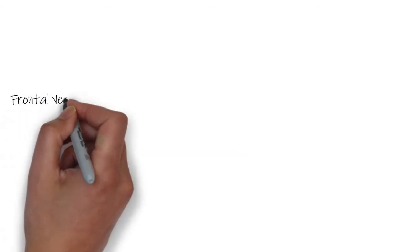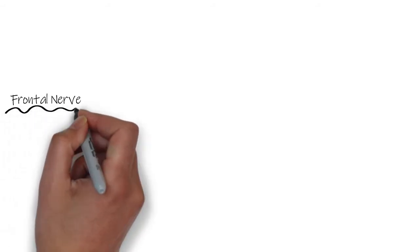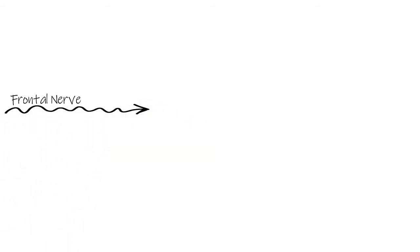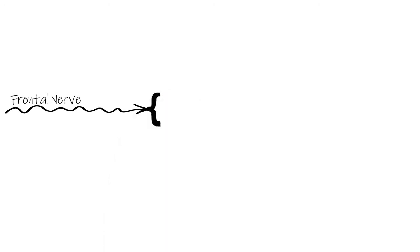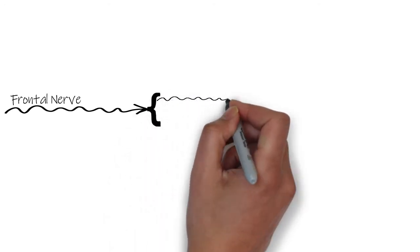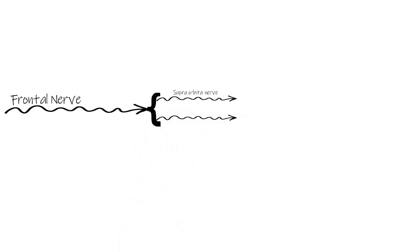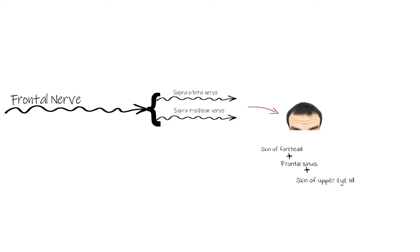The second branch of the ophthalmic nerve is the frontal nerve, which is regarded as a continuation of the ophthalmic nerve due to its size and length. After escaping the cranium through the superior orbital fissure, the frontal nerve subdivides into two branches: the supraorbital nerve and the supratrochlear nerve. Together they provide innervation to the skin of the forehead, the mucosa of the frontal sinus, and the skin of the upper eyelid.